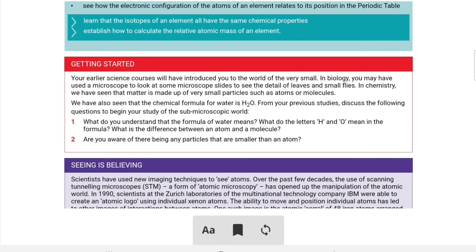From previous studies, discuss the following questions to begin your study of the sub-microscopic world. What do you understand from the formula of water? What do the letters H and O mean in the formula? What is the difference between an atom and a molecule? So the formula H2O means it contains two hydrogen atoms and one oxygen atom combined to form water.